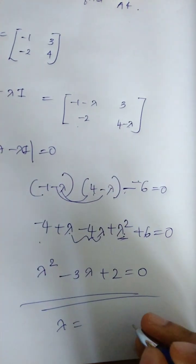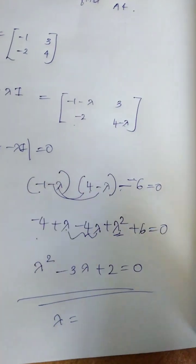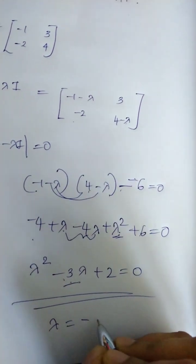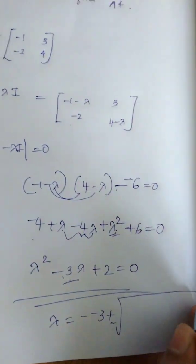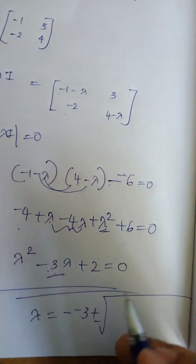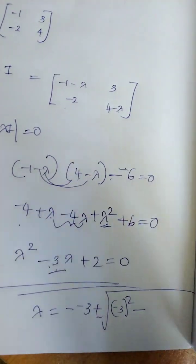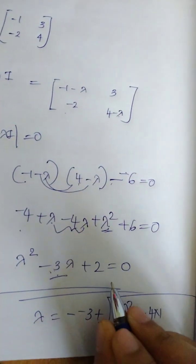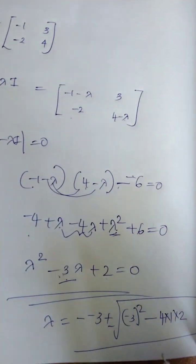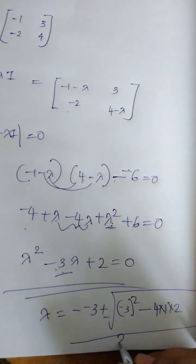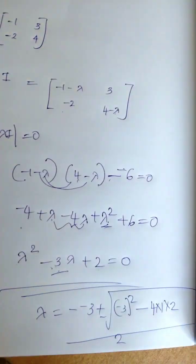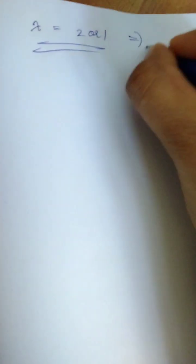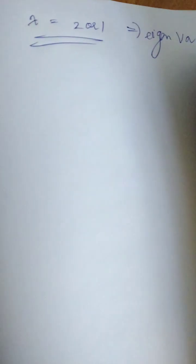We solve using the quadratic formula: lambda equals minus b plus or minus root of b squared minus 4ac, all divided by 2. Here b squared minus 4ac: b squared minus 4 times 1 times 2. So we have two eigenvalues to solve.